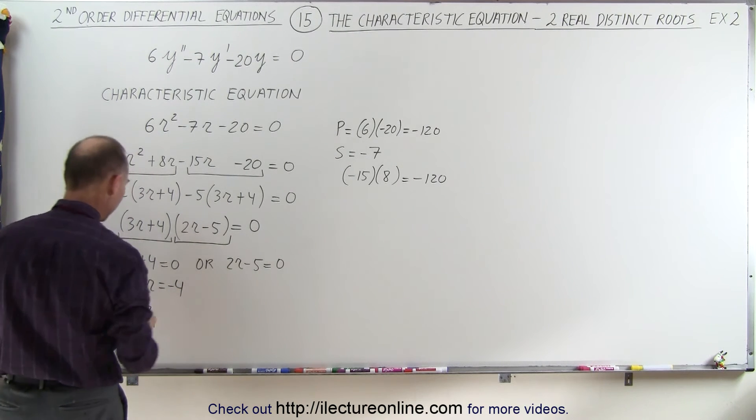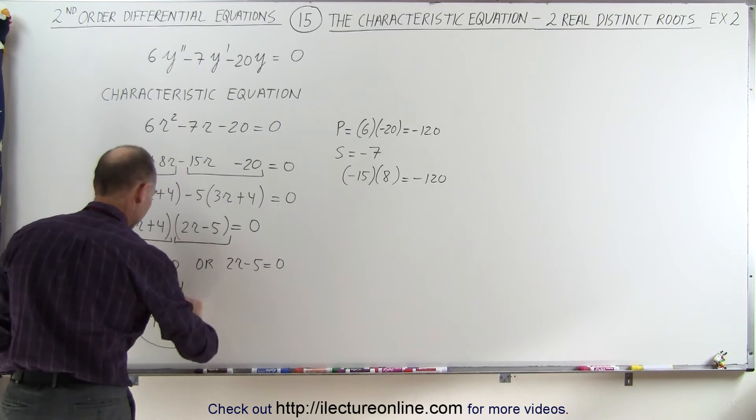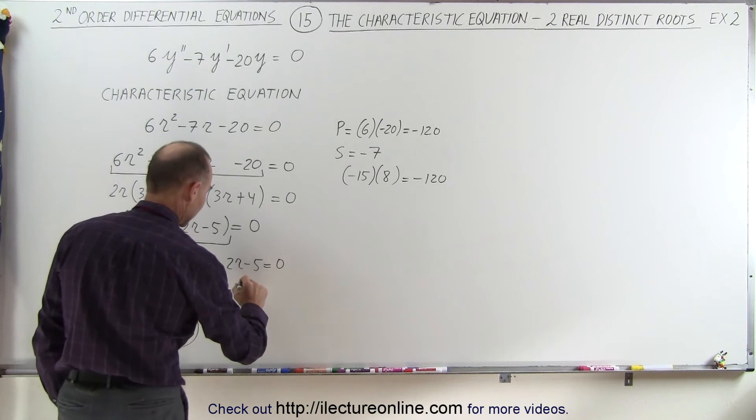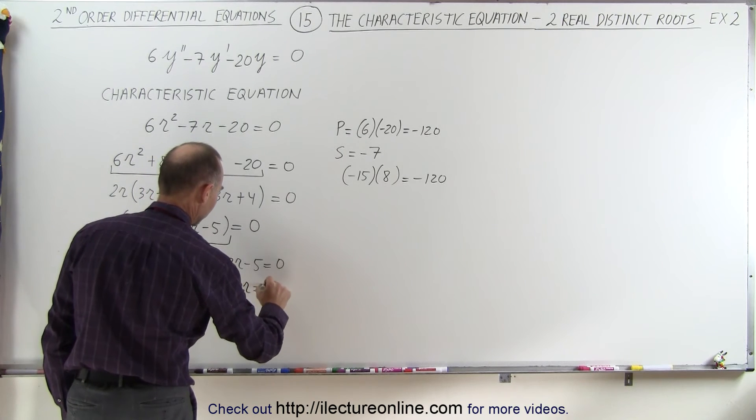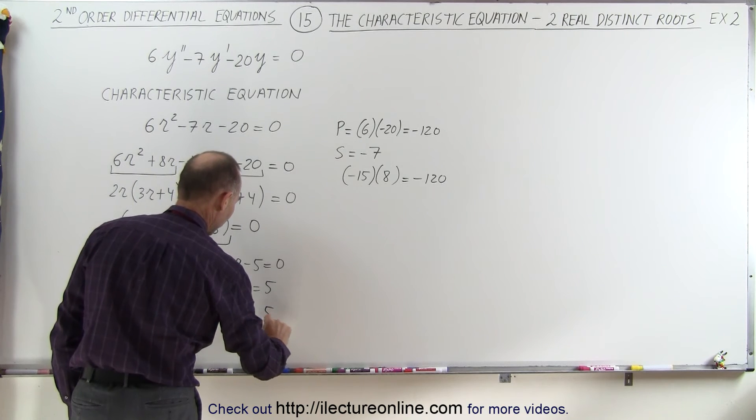So r1, the first root, is -4/3. The second root can be found by saying 2r = 5, and therefore the second root r2 = 5/2.